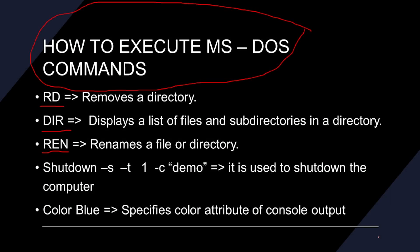Hello friends and family, once again welcome to how to execute MS-DOS commands, continuation of our previous lesson. Remember that we dealt with how to remove a directory, how to use the DIR command to display a list of files and subdirectories in a directory, and also how to rename a directory. Now today's segment — before I talk about how to shut the computer down using this command — I'd like us to look at COLOR.